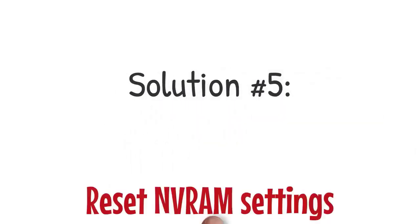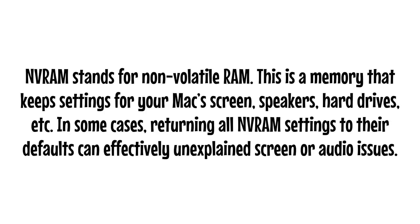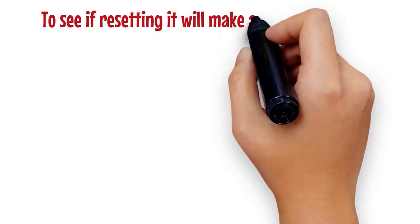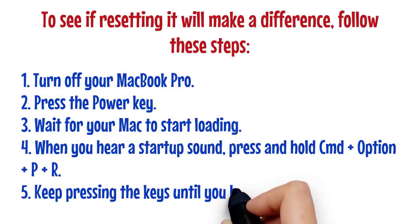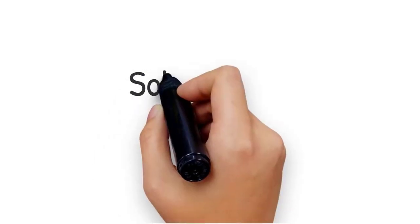Solution five: reset NVRAM settings. NVRAM stands for Non-Volatile RAM — a memory that keeps settings for your Mac's screen, speakers, and hard drives. Resetting NVRAM to its defaults can effectively resolve unexplained screen or audio issues. To reset: turn off your MacBook Pro, press the power key, and wait for your Mac to start loading. When you hear a startup sound, press and hold Command + Option + P + R, and keep pressing until you hear a second startup sound.